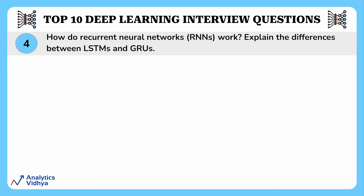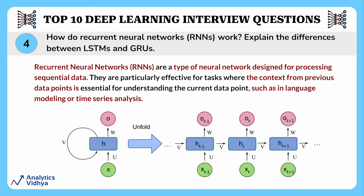This question asks about how recurrent neural networks work and what are the differences between LSTMs and GRUs. RNNs are a type of neural network designed for processing sequential data. They are particularly effective for tasks where context from previous data points is essential for understanding the current data points, such as in language modeling or time series analysis. Imagine you are reading a story — RNNs help understand it by considering sentences one by one, paying attention to what happened before.